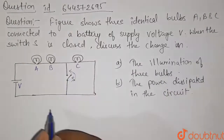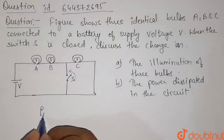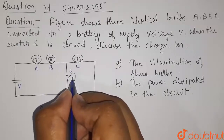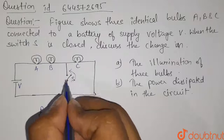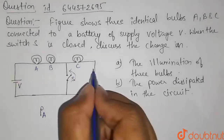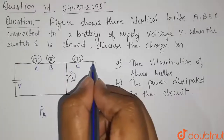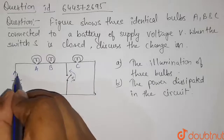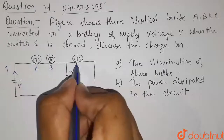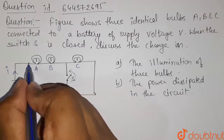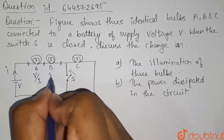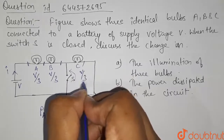The illumination of the bulb depends on the power consumed by the bulbs. We will take two cases: first, when the switch is open, and second, when the switch is closed. In the first case, when the switch is open, these three bulbs are connected in series combination because the same current flows through all three. Since the bulbs are identical, the potential difference across each is V/3.